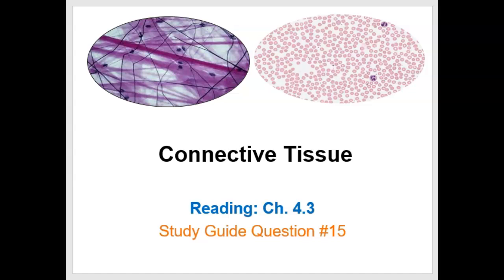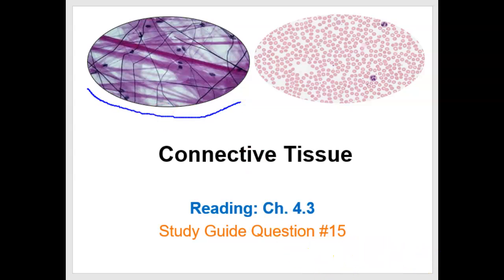Hello A&P1 students. This lecture covers connective tissues, our last category of tissue types in our study of histology. I wanted to show you right away some connective tissues so that you can see how diverse they are. The image in the upper left is called loose connective tissue. It's found underneath the skin, surrounding many organs. And the image on the right is blood.